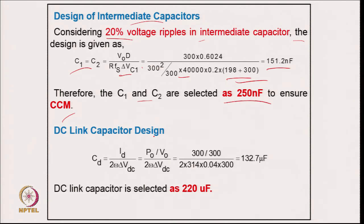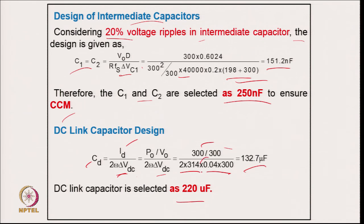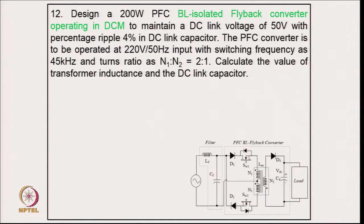The DC link capacitor is designed using C_d = I_d / (2 × ω × ΔV_d). Putting in the values for power, output voltage, 4 percent voltage ripple, and the second harmonic gives 132.7 μF. The DC link capacitor is selected slightly higher at 220 μF to ensure voltage ripple never exceeds 4 percent.